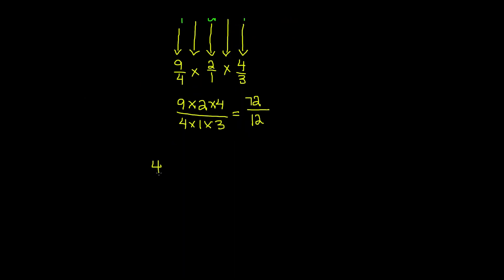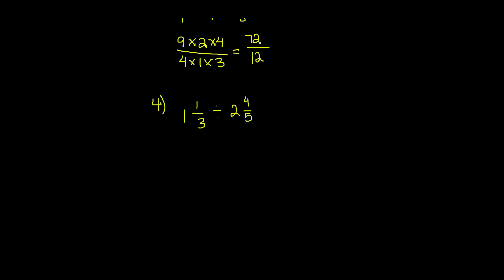Problem number four. Now instead of fractions, we have mixed numbers: one and one-third divided by two and four-fifths. The first step when dividing mixed numbers is to convert them to improper fractions. To do this, multiply the denominator three by the whole number one — three times one is three — then add the numerator: three plus one is four. So four over three is our improper fraction.